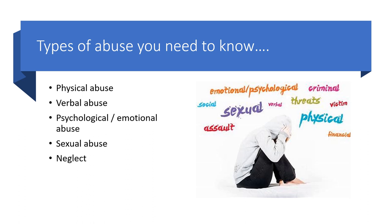For the exam, the types of abuse you need to know are physical abuse, verbal abuse, psychological or emotional abuse, sexual abuse and neglect. It might be worth pausing the PowerPoint now and having a go at writing down a definition of what each of these means, and also adding some of the signs and symptoms you think might be related to these forms of abuse. Have a go at this before you move on to the next slides.